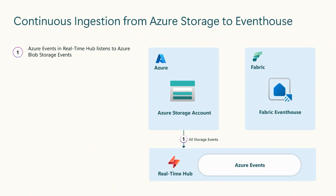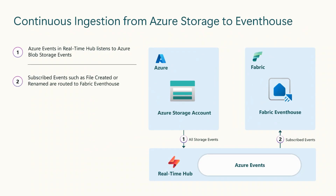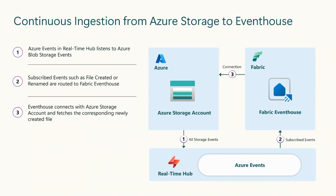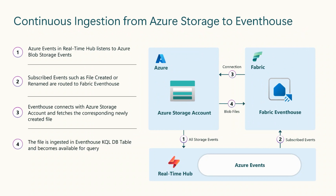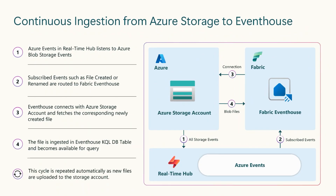First, the Azure Events in Real-Time Hub listens to Azure Blob Storage events. Subscribed events such as file created or renamed are routed to Fabric Event House. Based on these triggers, the Event House connects with the Azure Storage account and fetches the corresponding newly created file. This file is finally ingested in the Event House KQL DB table and becomes available for query in near real-time. The cycle is automatically repeated as new files are uploaded to the storage account.